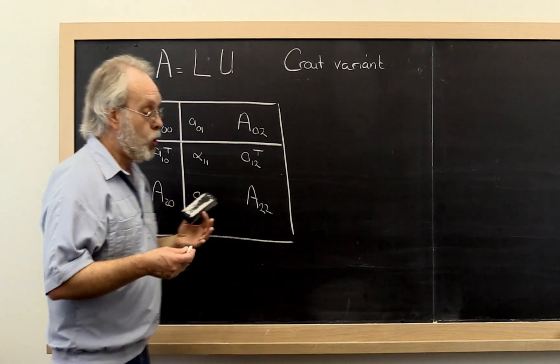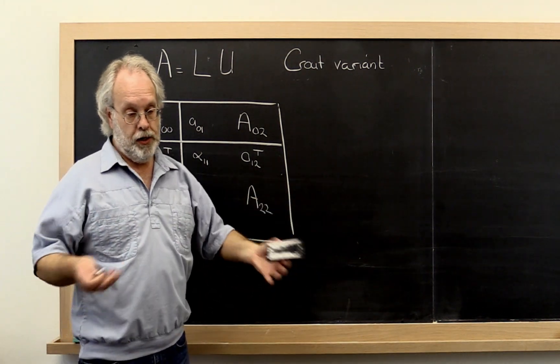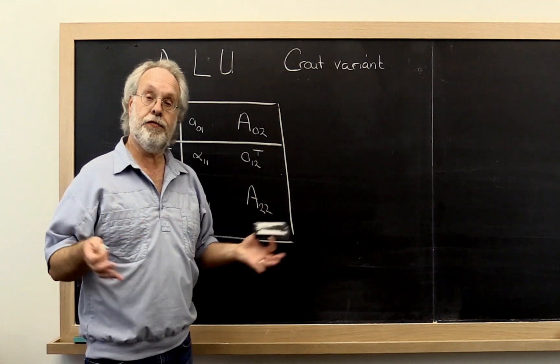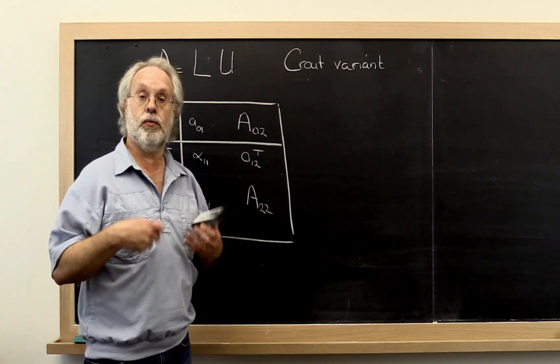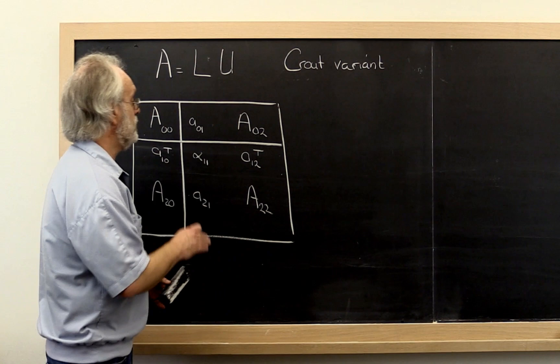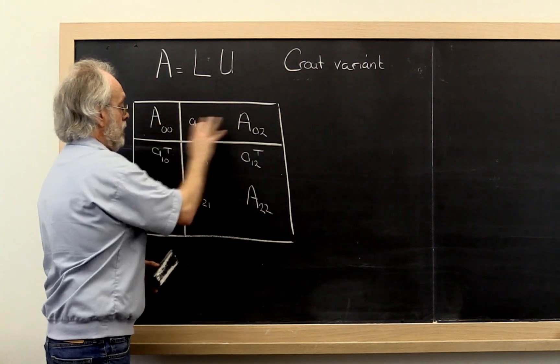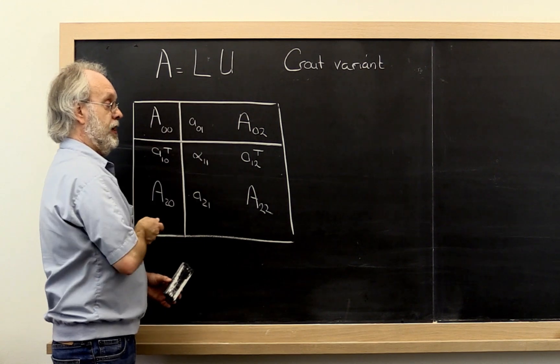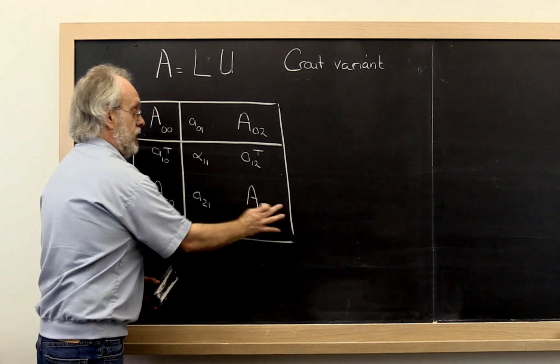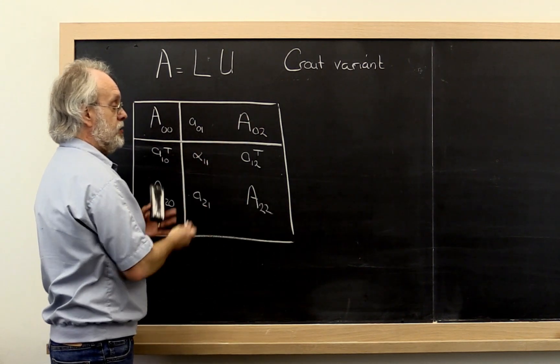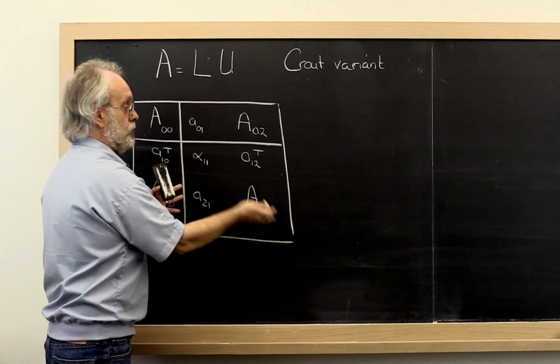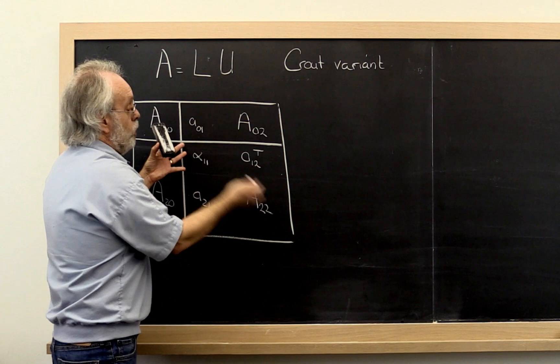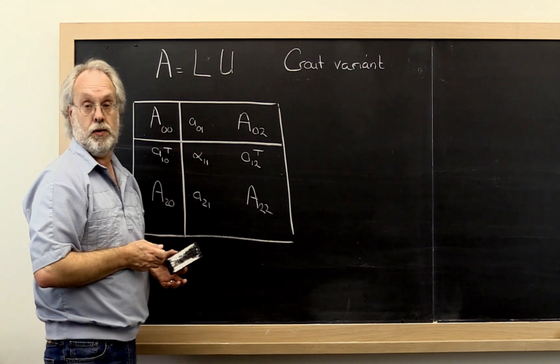Over the course of week five we encountered a number of different algorithms. We encountered the right-looking algorithm which had the property where everything here and here was finished and had been overwritten with the appropriate parts of L and U. This submatrix had been appropriately updated, so all we were left with was having to factor that matrix. In the current step we just made one more step forward towards that.